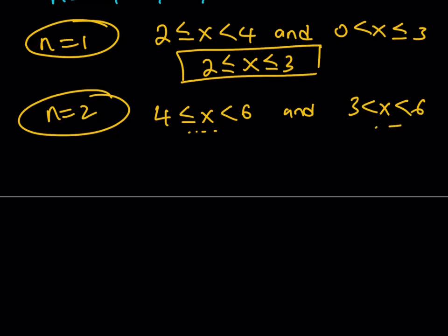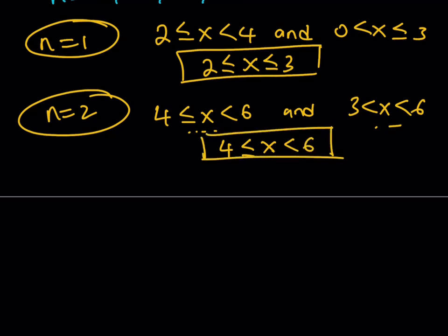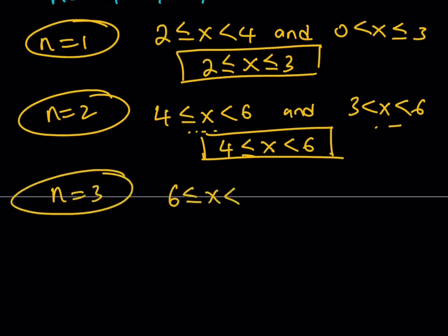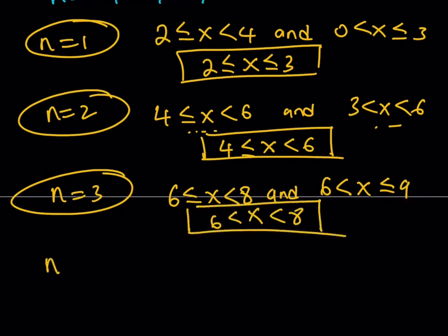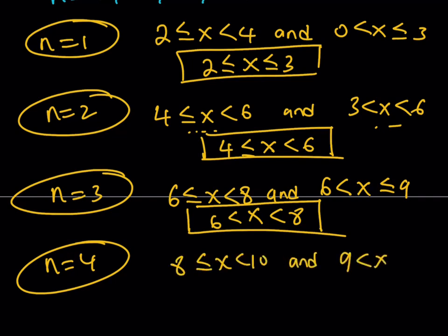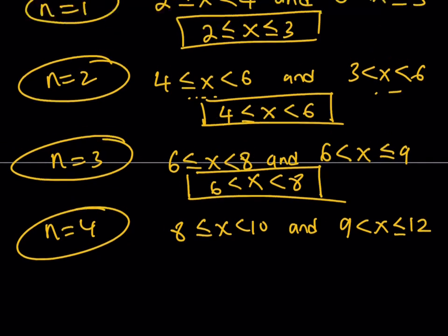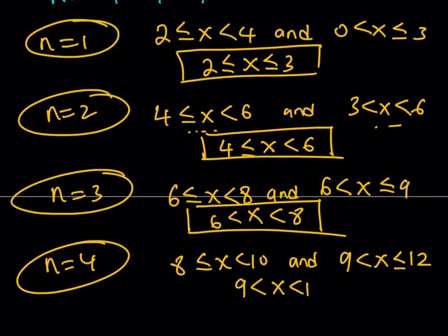That pattern repeats. For n equals 3, x must be between 6 and 8 and between 6 and 9, so the intersection is 6 < x < 8, not inclusive. For n equals 4, we get 8 ≤ x < 10 and 9 < x ≤ 12, and the intersection is 9 < x < 10, with neither endpoint included.